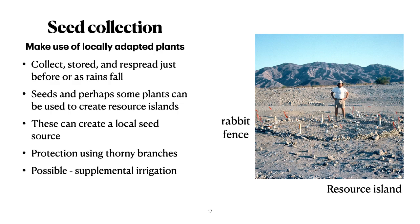The seed has to be collected, cleaned, stored, and then ideally re-spread just before or as it starts to rain, so it's not all eaten or blown away. One option is to create what's called a resource island — an area within a site that gets a fence, irrigation of some kind, and either seeded and/or container plants to provide a local source of seeds and micro-symbionts of all kinds for the site. These can create a local seed source that seeds the site year after year and would gradually fill in the denuded areas. Protection could be built with thorny branches instead of a wire fence, and where possible, supplemental irrigation can make a big difference in getting things started.